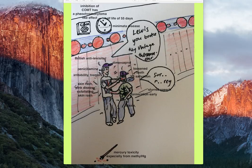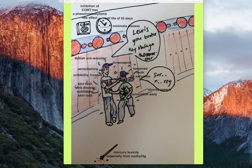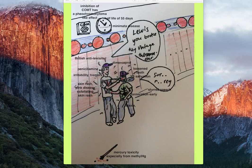The broken thermometer represents mercury toxicity. The most potent form of mercury is methyl mercury, because it's more bioavailable and has more negative consequences in the body. To remember this, I've drawn two balls connected together — one represents mercury, the other represents the methyl group. Alternatively, think of a thermometer where the bulb is the mercury and the long stem is the methyl group.